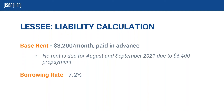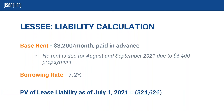We do have a present value calculator tool on our website, which is what we used to come up with our liability calculation today. You would input the payment information, the term, and the borrowing rate, and it gives you the measurement of the liability. We plugged in our $3,200 payments over that 11-month term — actually making eight payments — at a 7.2% borrowing rate, and that gives us a present value of $24,626.